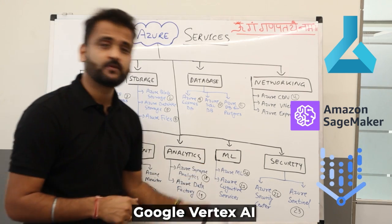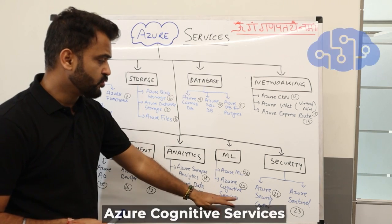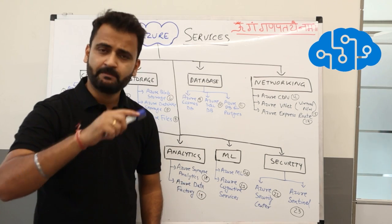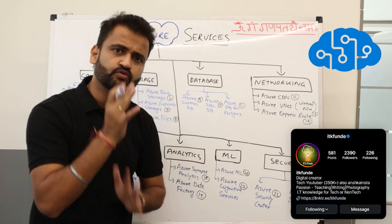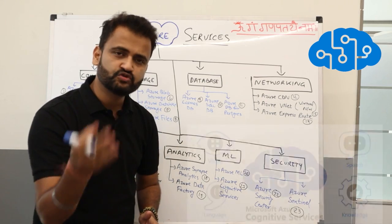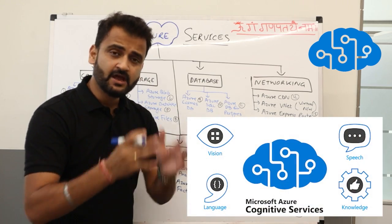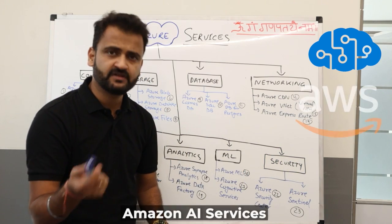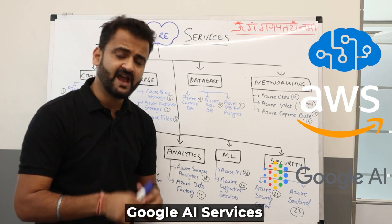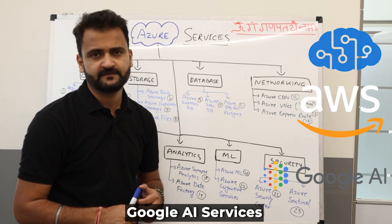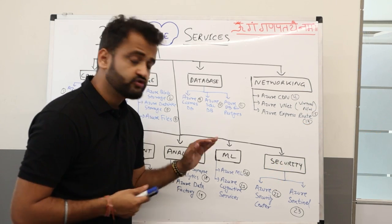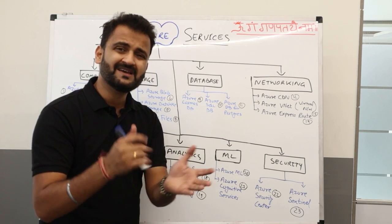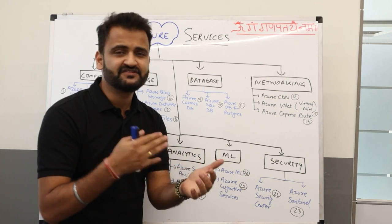Azure Cognitive Services is related to machine learning but is specifically focused on image recognition, text to speech, and vision APIs. On Amazon there are AI services under Amazon AI, and on Google Cloud there are AI services with different names. Azure Cognitive Services is a suite of services giving you speech, learning, and decision-making capabilities using AI and machine learning.